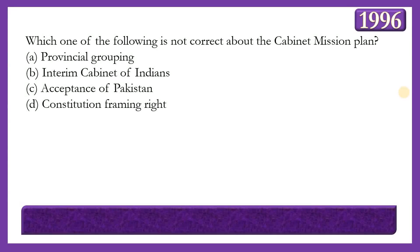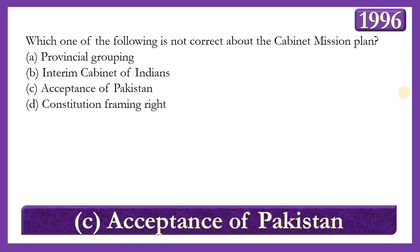Next question: Which one of the following is NOT correct about the Cabinet Mission Plan? Options: Provincial Grouping; Interim Cabinet of Indians; Acceptance of Pakistan; Constitution Framing Rights. The answer is option C — acceptance of Pakistan — because the Cabinet Mission Plan recommended an undivided India and did not support the partition. The Muslim League turned down this mission and demanded Pakistan.